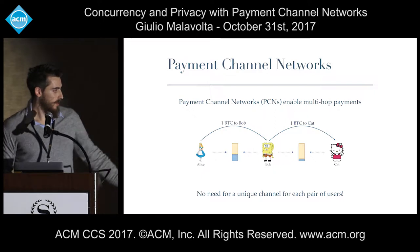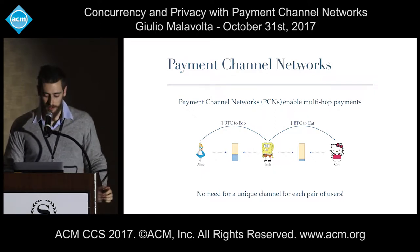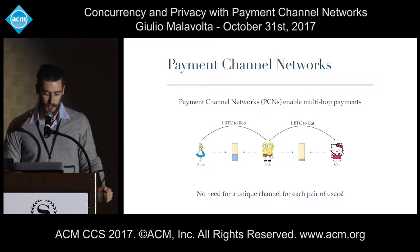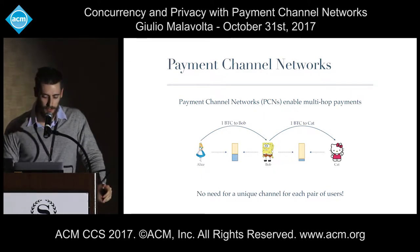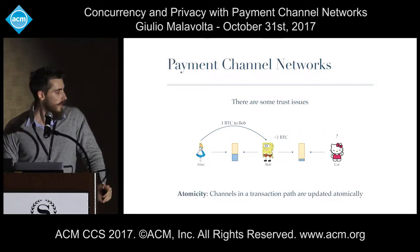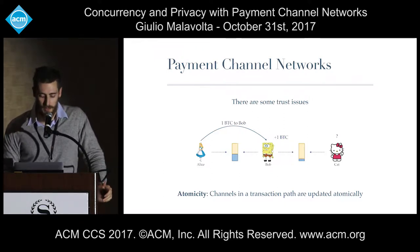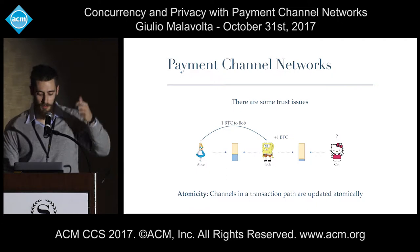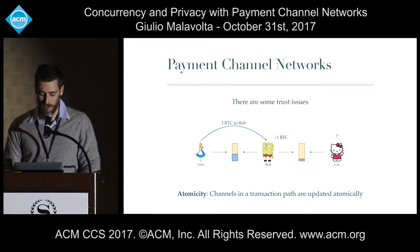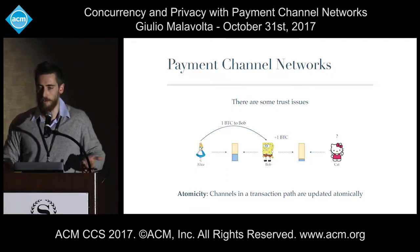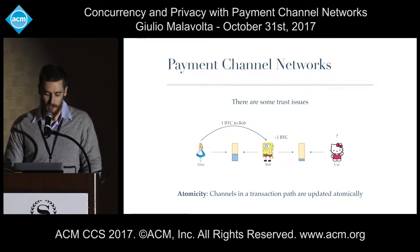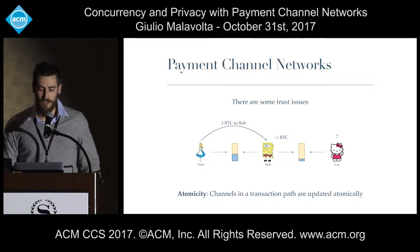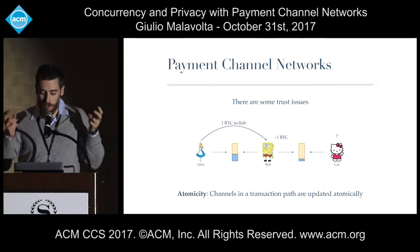The idea is very simple: to perform a payment from Alice to Cat, you just give one Bitcoin to Bob and then wait until Bob sends this Bitcoin to Cat. This increases scalability even further. There are obvious trust issues when you implement this mechanism naively. If you just hope that Bob will give his Bitcoin to Cat, there is an obvious attack because Bob could simply withhold and effectively increase his own funds by one Bitcoin.